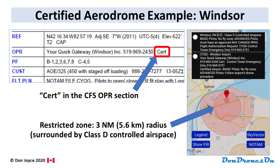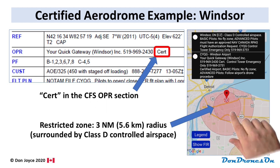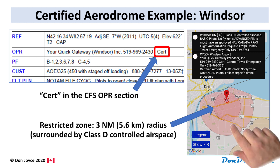Here's an example of a certified aerodrome: the Windsor, Ontario airport. The magic word CERT appears in the operator section of the CFS listing, and you can see the operator name and phone number to contact for permission. Here's the 3 nautical mile drone restricted zone, and in this case it overlaps with a larger Class D controlled airspace.